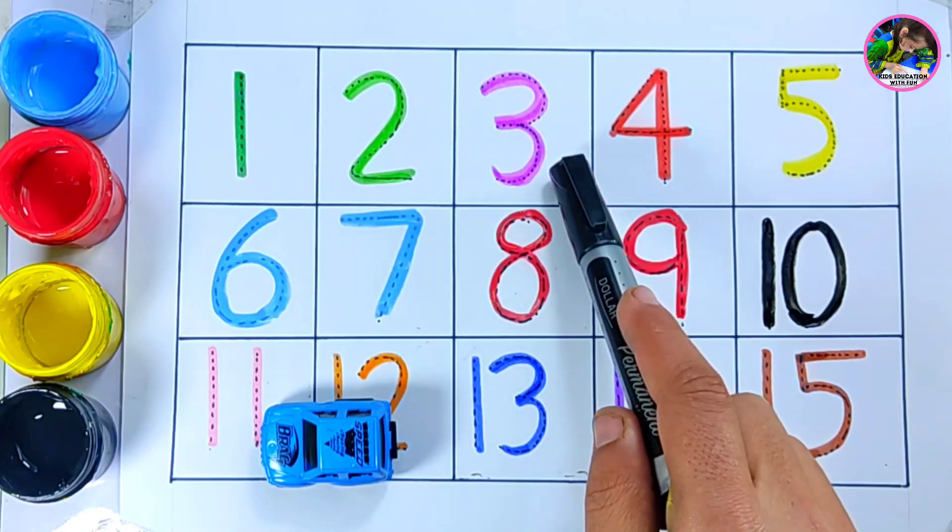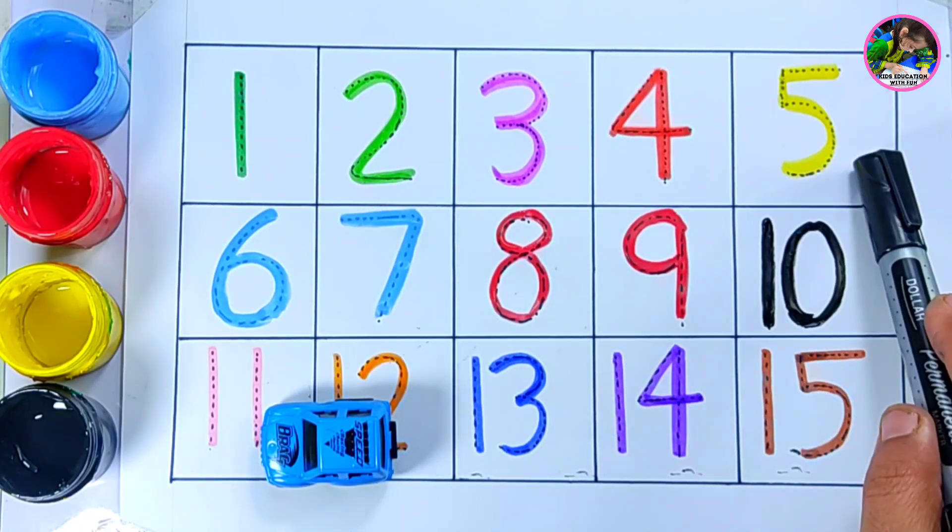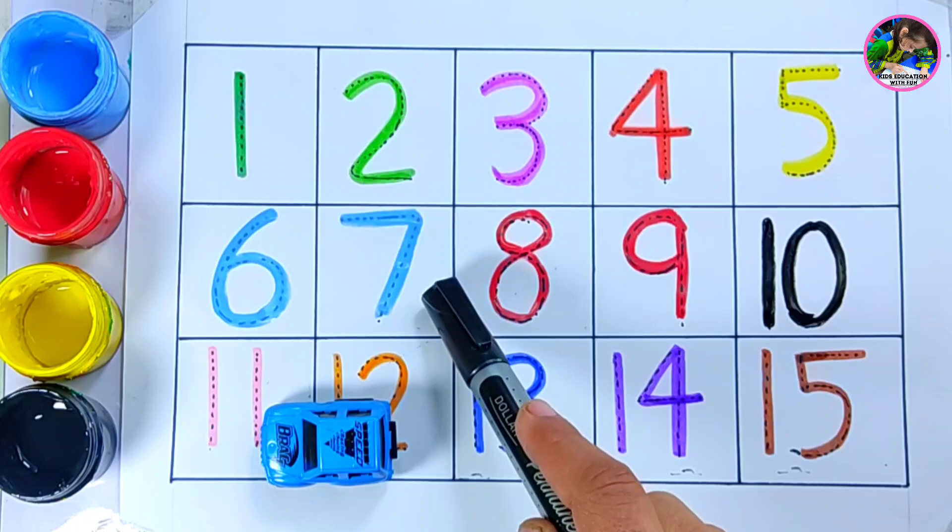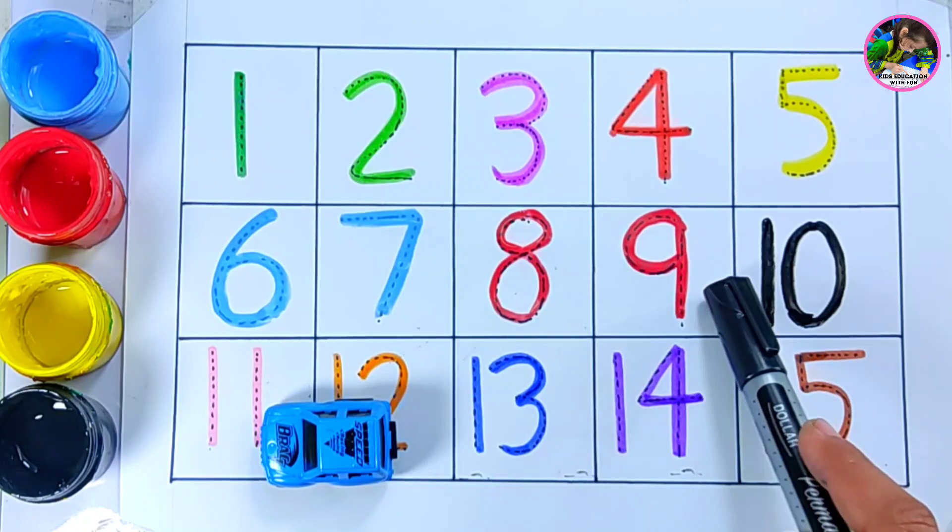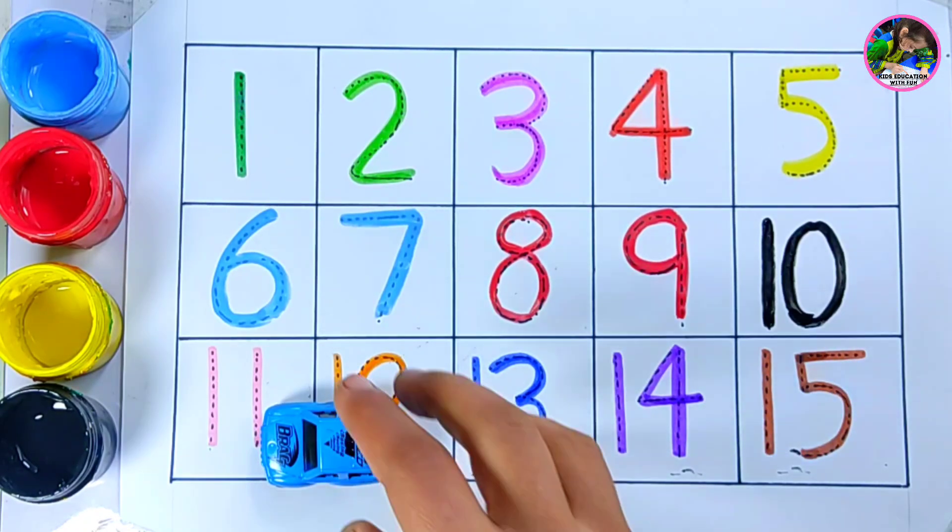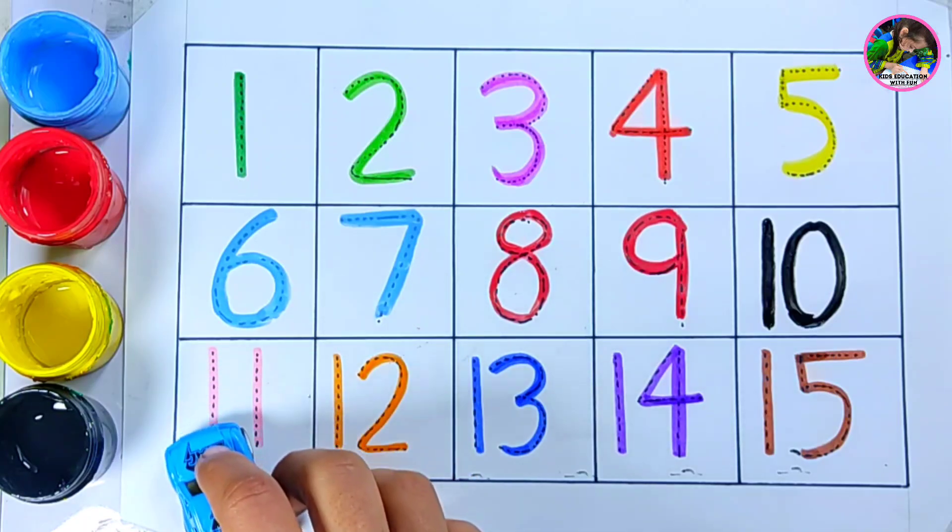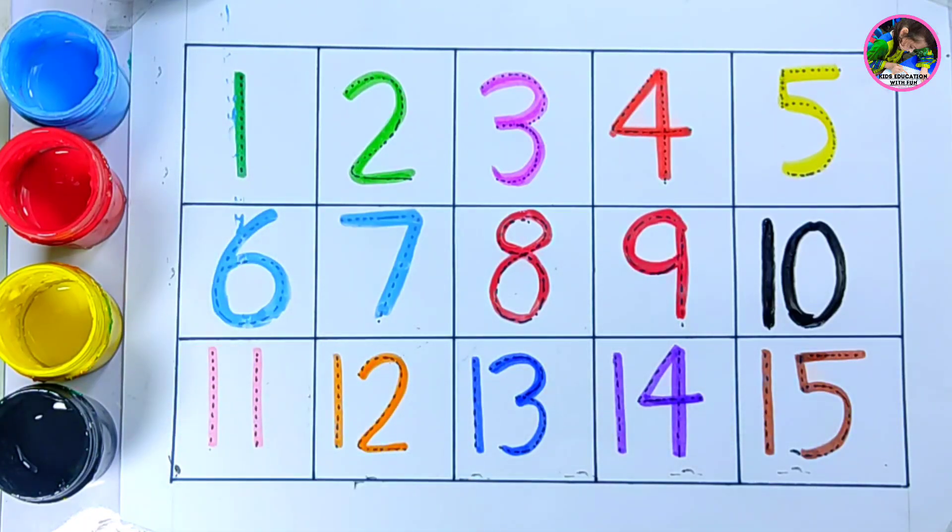Let's revise: one, two, three, four, five, six, seven, eight, nine, ten, eleven, twelve, thirteen, fourteen, fifteen.